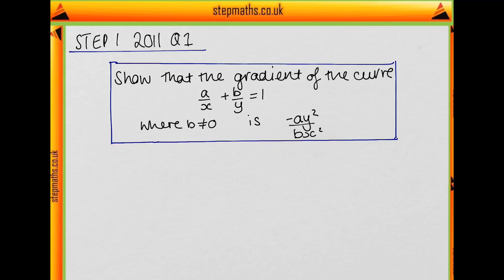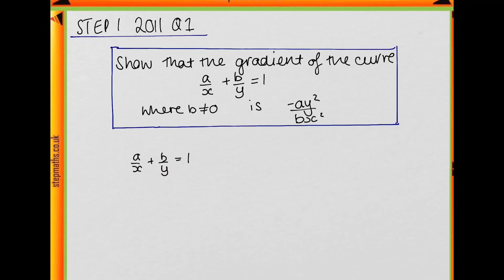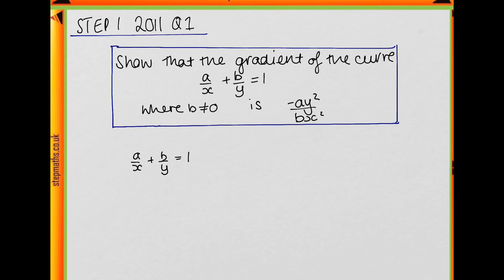So let's look at the equation. To find dy/dx, we could differentiate implicitly, or we could rearrange to find y in terms of x.